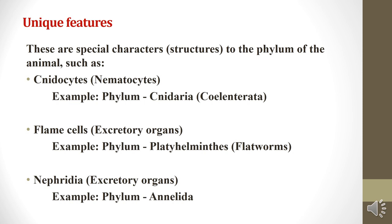Some unique features are special character structures specific to certain phyla of animals. Examples include nidocytes or nematocytes in phylum Cnidaria; flame cells, which are excretory organs, in phylum Platyhelminthes (flatworms); and nephridia, which are excretory organs, in phylum Annelida.